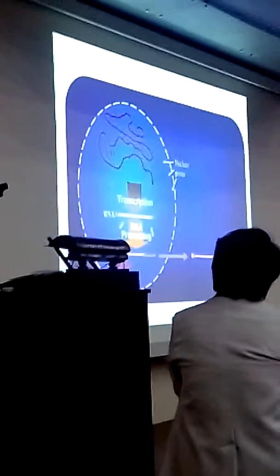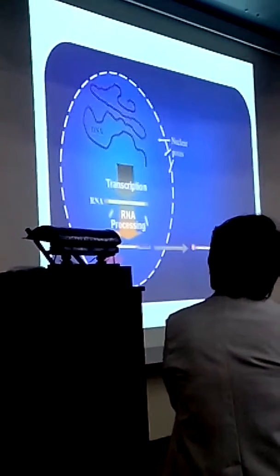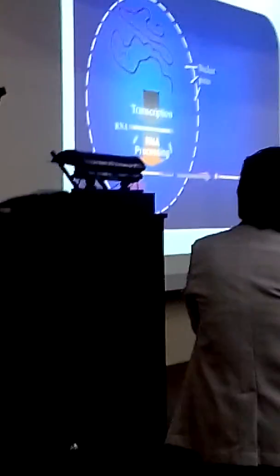Transcription happens in the nucleus, processing also happens in the nucleus. That's why it is the matured or functional RNA that eventually is transported into the cytoplasm.